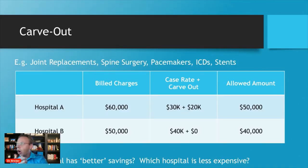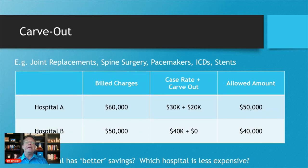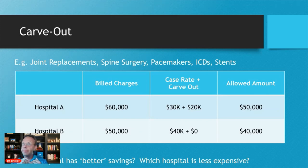Next up: carve-out. A carve-out is a specific line item for reimbursement within the bill, and typically this is used for joint replacements or spine surgeries that use implants like rods and screws, or pacemakers, which is a cardiac pacemaker where it's an implant, or an ICD — an implantable cardiac defibrillator — for people that have had either heart attacks or congestive heart failure. They'll have an ICD, which is kind of like a pacemaker.